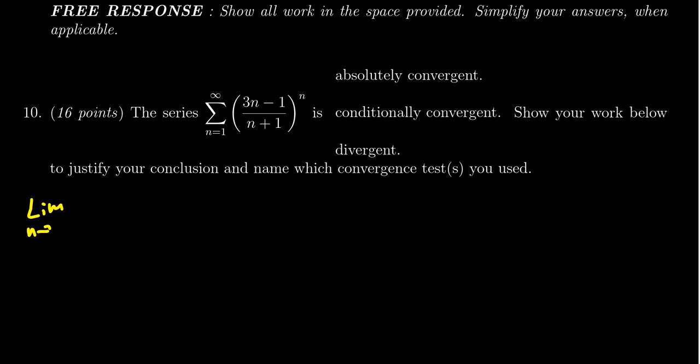If you take the limit as n approaches infinity of the nth root of this thing, we get 3n minus 1 over n plus 1, all raised to the nth power. The nth root is going to cancel out the nth power. So this limit then becomes the limit as n goes to infinity of 3n minus 1 over n plus 1.